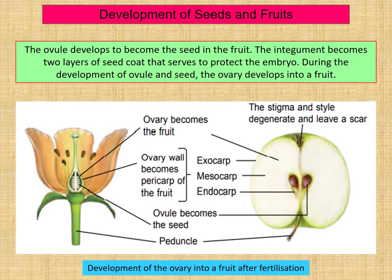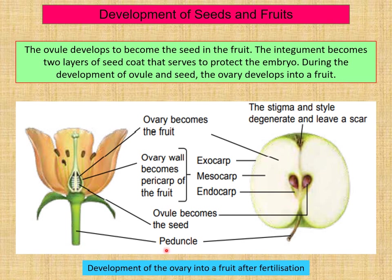These diagrams show the development of the ovary into a fruit after fertilization. The ovules develop to become the seeds in the fruit. The integuments become two layers of seed coats that serve to protect the embryo. During the development of ovules and seeds, the ovary develops into a fruit. The ovary walls become the pericarp of the fruit, which consists of exocarp, mesocarp and endocarp. Ovules become the seeds of the fruit. The peduncle supports the flower and also supports the fruit.